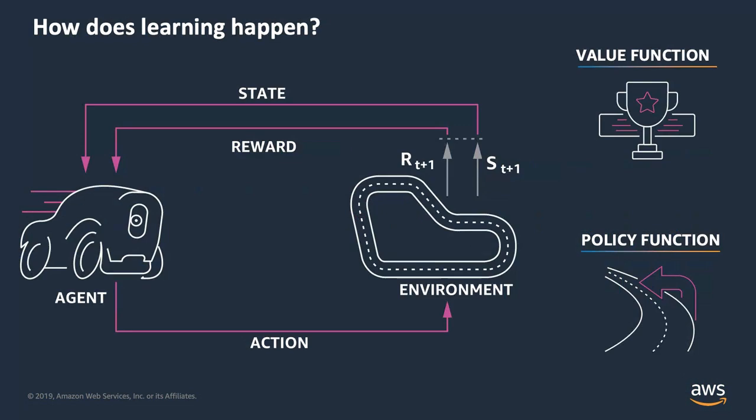To dig a bit deeper, let's look at how DeepRacer actually works. Every 1/15th of a second, the vehicle takes a picture of its surroundings. This is what we've been referring to as a step. This picture represents its state, and the ML model you're building will then use its algorithms to infer what the next best course of action is. This course of action results in a new state, and the process repeats until it hits what's called terminal state — i.e., it fails or completes the track — in which case it will restart.